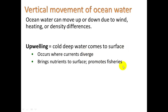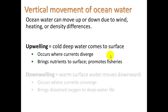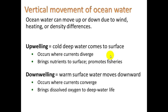Upwelling is really important for fisheries, because in order to have healthy fish, they need to have enough plankton to eat, and the plankton need those nutrients. There is something called downwelling, which is when warm surface water moves downward. It occurs where currents converge — if two currents come together, one of them is going to get pushed down. That's called downwelling.